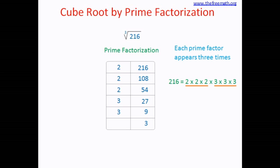Now you want the root of the cube number — that means you want the root number that made this cube number. So what we do here is, from the set of three 2's we take only one 2, and from the set of three 3's we take only one 3, and multiply that. So 2 times 3 is 6, and the cube root of 216 is 6.